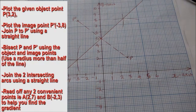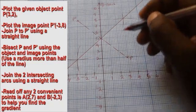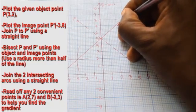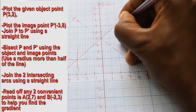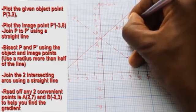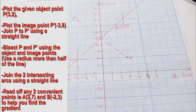Read off any two convenient points on the line to help in finding the gradient. For example, we can read off point A which is (2, 7) and point B which is (-2, 3).